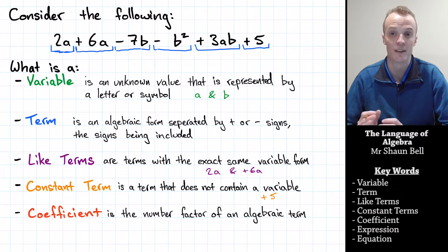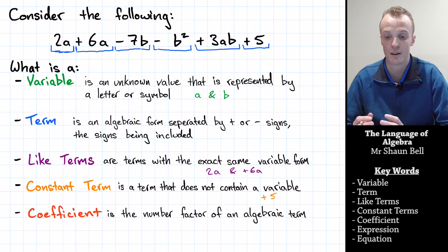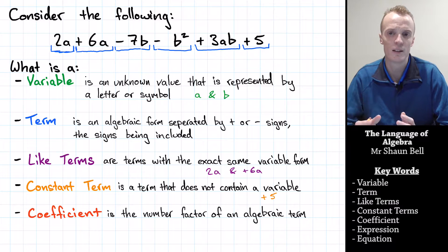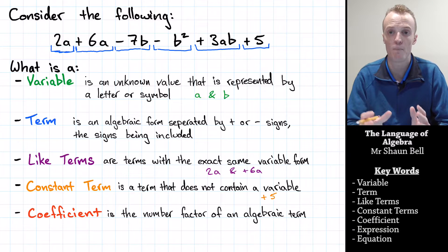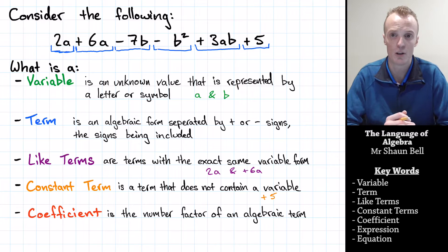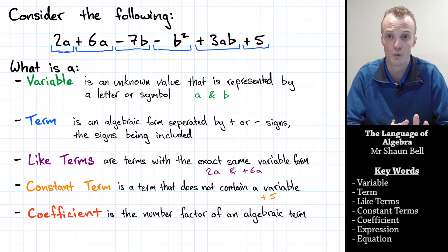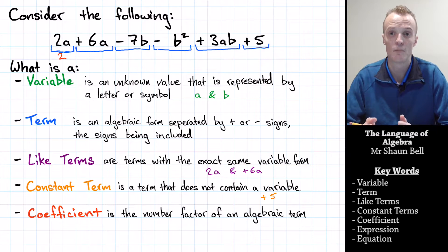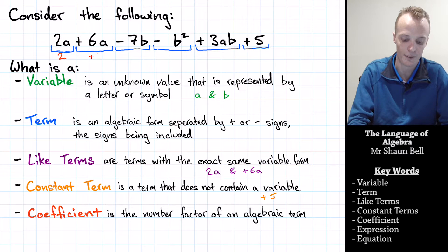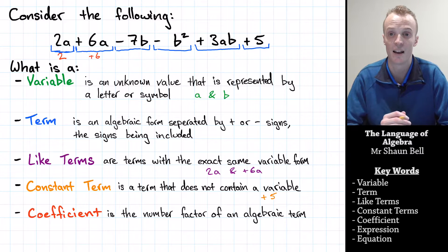And the final word that we'll look at with this particular statement is the word coefficient. Now, a coefficient is the number factor of an algebraic term. In other words, it is the number part of each individual term, or what we generally write before any variable. Now, if we look at it term by term, the first term, the number proportion, is the 2 that's just before the variable of A. So the coefficient of A here is 2. In the second term, the number proportion is the plus 6, so it is the plus 6, which is the coefficient to the second A within this statement.